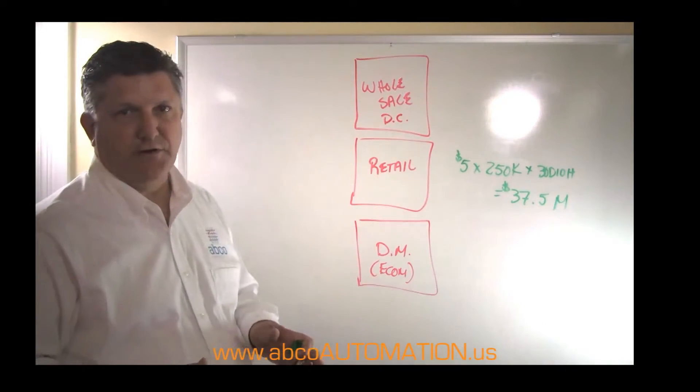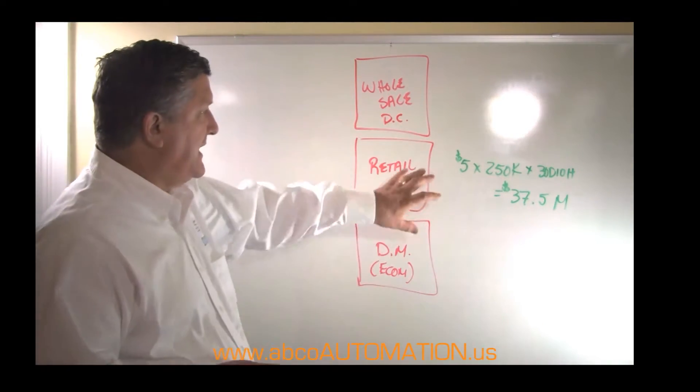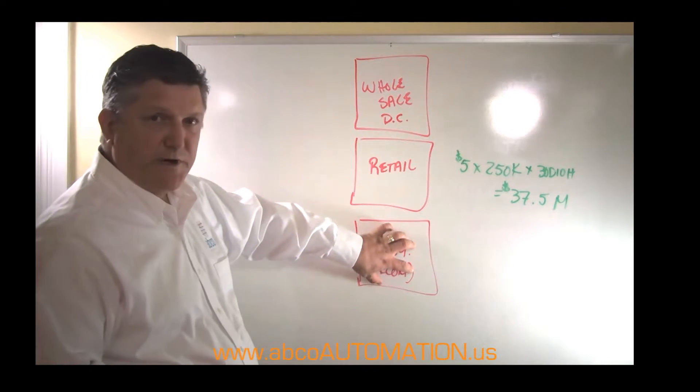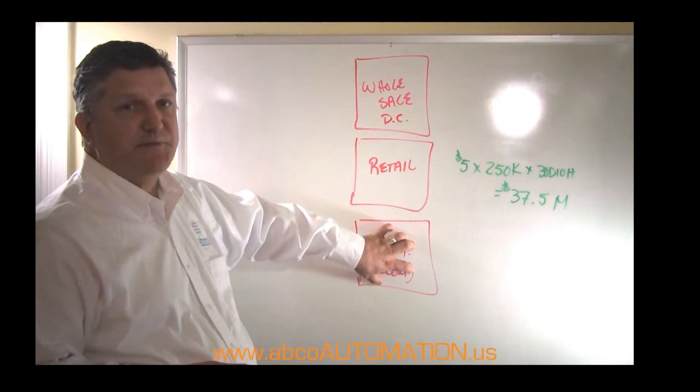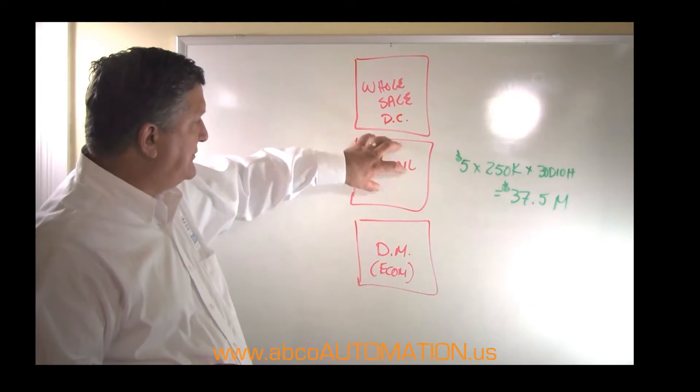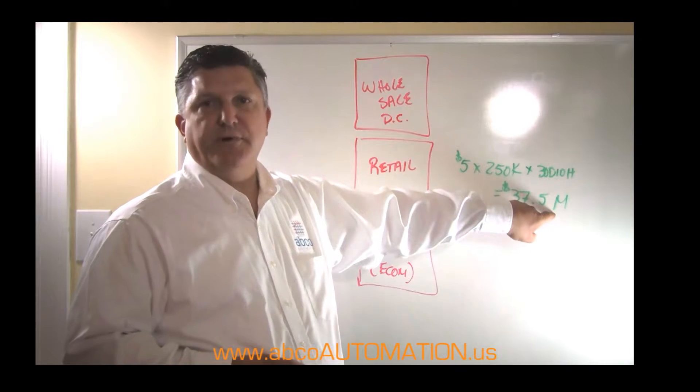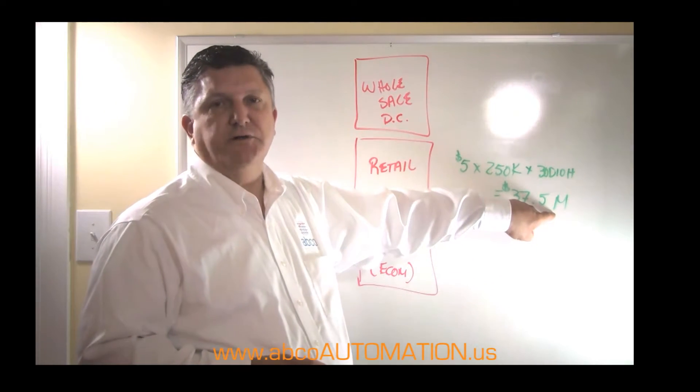Just an inventory carrying cost. That is to say, I have inventory here in retail, and I have inventory here in this facility, and it has to be the same inventory. So I have duplicated inventory in two buildings, both of which is worth about $37.5 million a month.